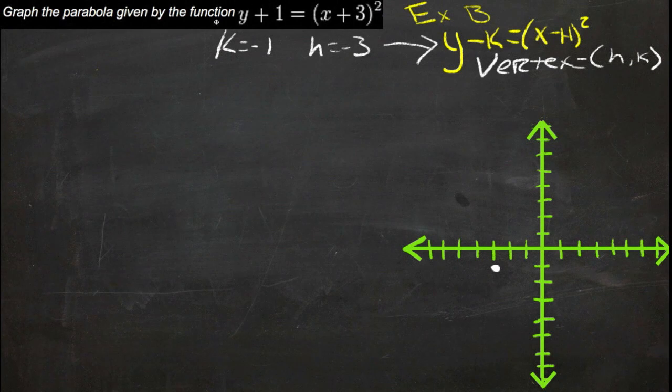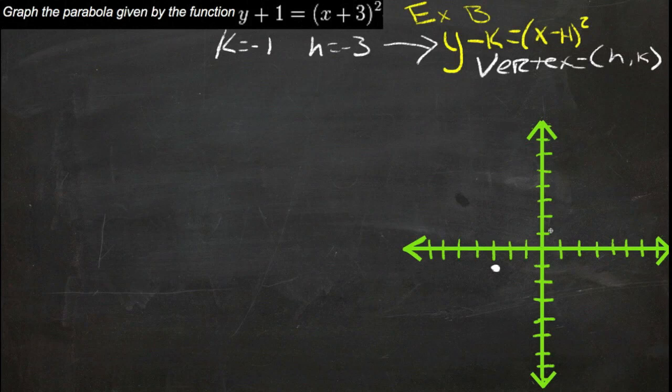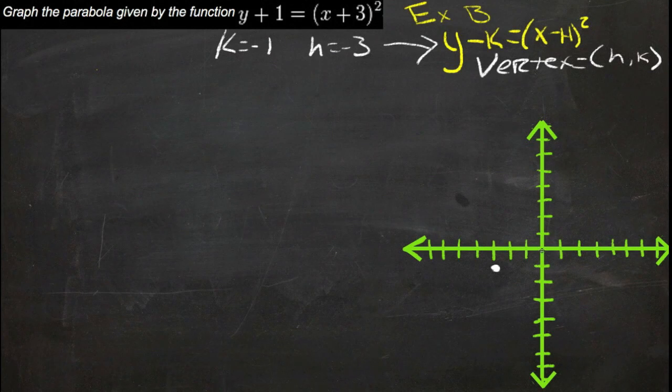So let's solve for the x-intercepts, which means that y would be 0. Anytime y is 0, we're on the x-axis, because we're not going up or down at all. We're directly on the x-axis.